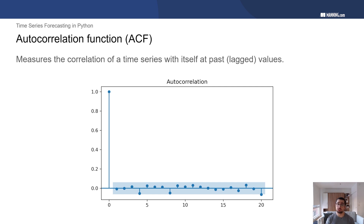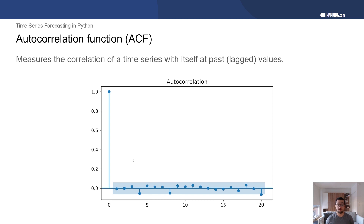Once we know we have a stationary process, we can then plot the ACF — the autocorrelation function. The autocorrelation function simply measures the correlation of the time series with itself at past values, which we also call lagged values. At lag 0, we always have an autocorrelation coefficient of 1 — that makes sense, because it's the correlation of a value with itself. Then we look at the correlation of the present value with one past value, two values prior, three values prior, and so on. The x-axis tells us how many lags we are comparing to.